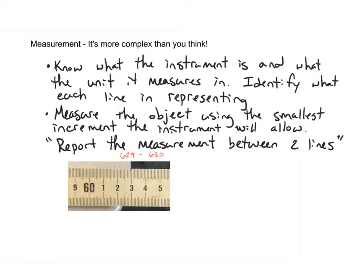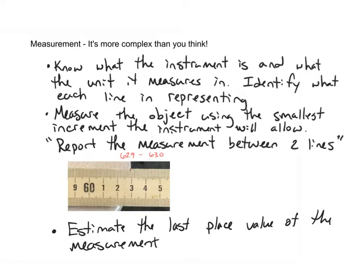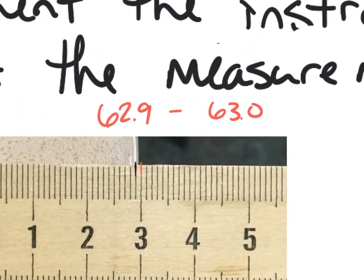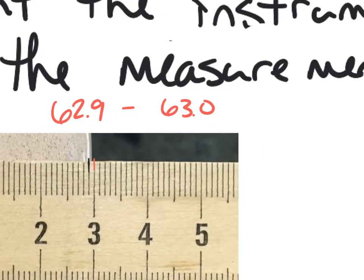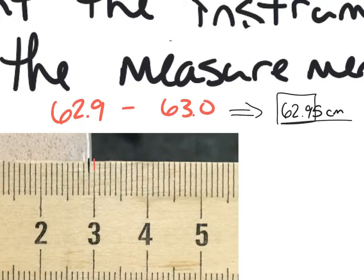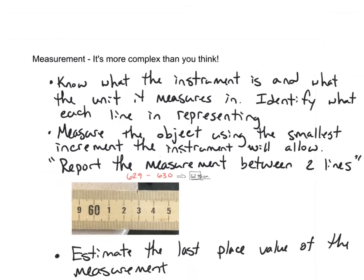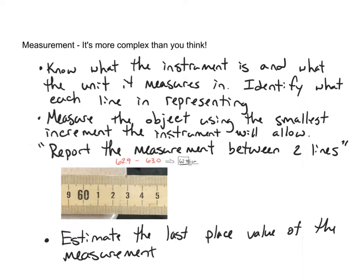You don't actually write the two lines down — you just think about it visually. The last thing you want to do, and it's the most important step that most people don't do correctly, is to estimate the last place value of the measurement. Since my measurement goes to one past the decimal, I report my final answer to two past the decimal. I know it's about halfway between 62.9 and the next line, so I call it 62.95 centimeters. The first three numbers I know for sure; the last number is the one I estimated. All four numbers together represent the full measurement.